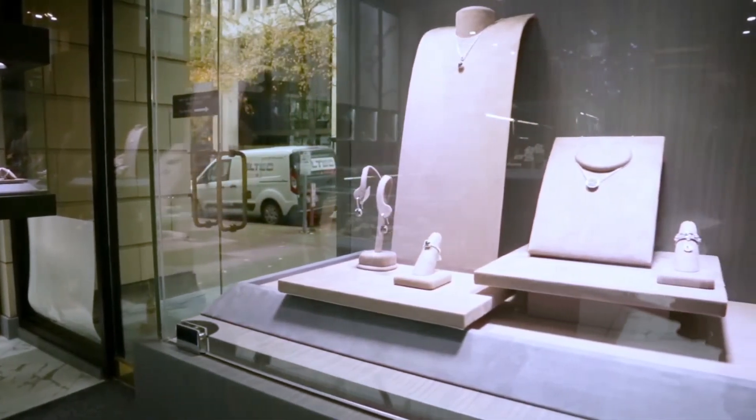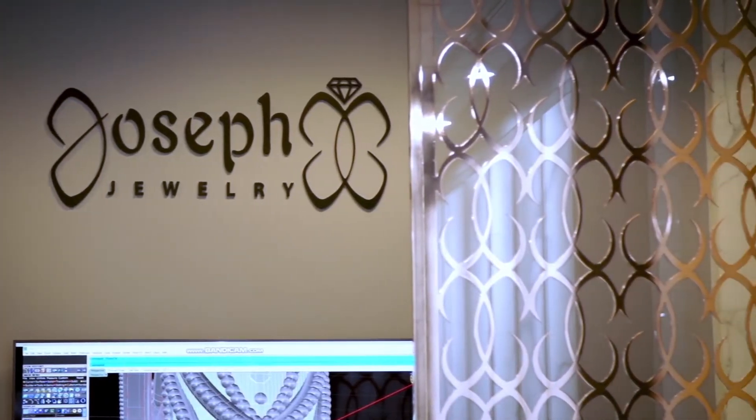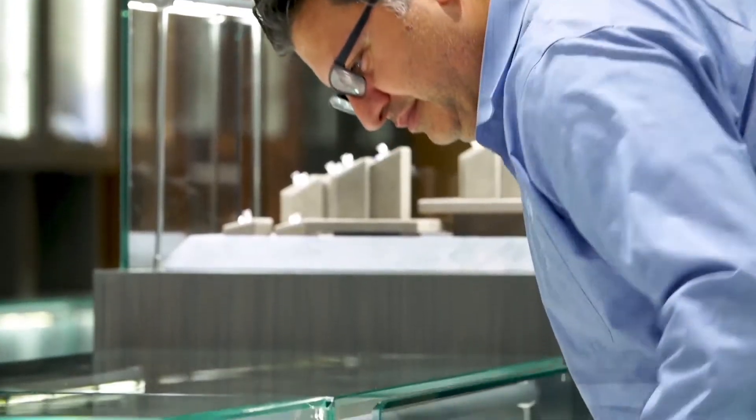I'm Anthony Hogue. I'm the store manager of Joseph Jewelry here in Seattle. Joseph Jewelry has been in business for over 22 years and the family has been in the business for about 30 years.